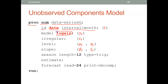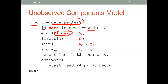You want to model the sales — or consumption — which is the variable of interest, the variable you want to forecast. You tell SAS to model this variable from this data set. You tell SAS there's an error component, a level component, a slope component, and a seasonality component. For seasonality, you need to tell SAS how long a season is.